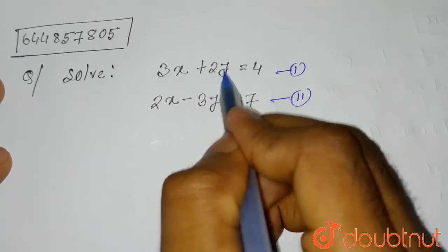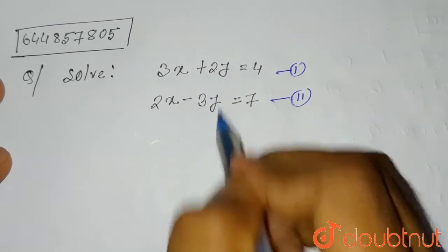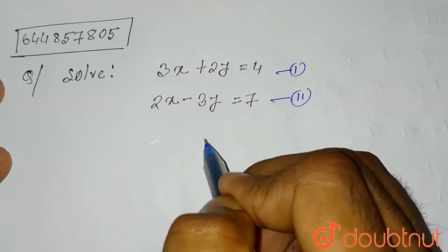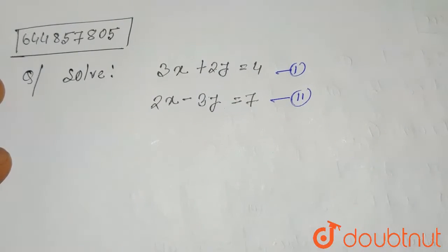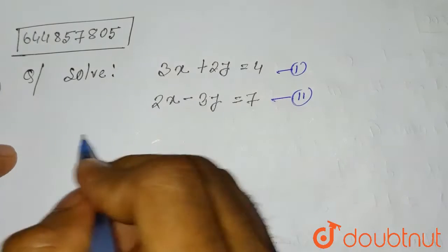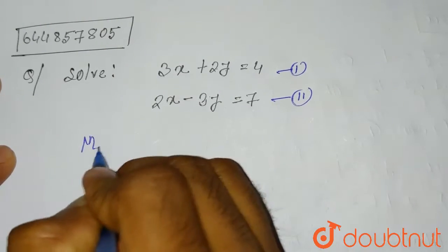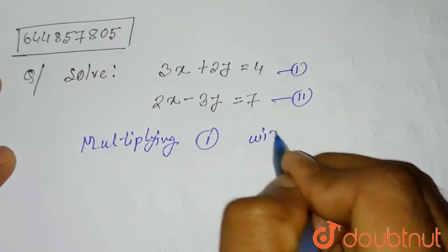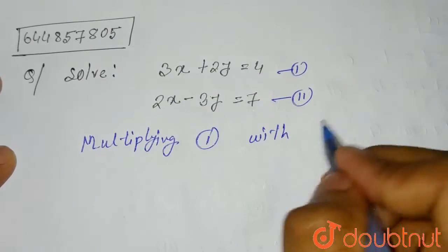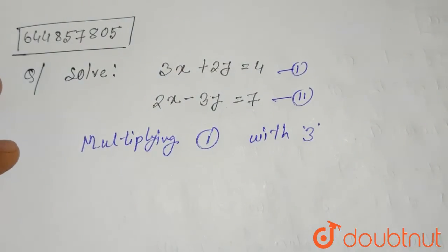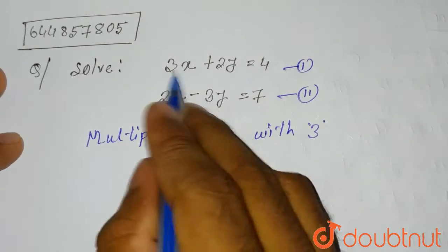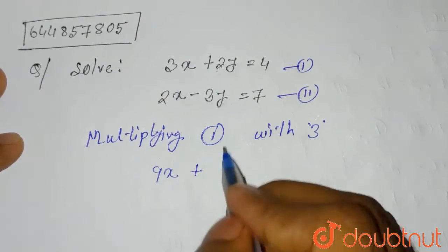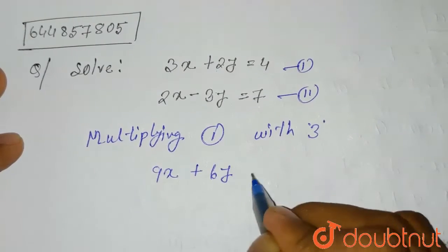First of all, to make the coefficient of y equal in both equations, we have to multiply the first equation by 3, giving 6, and the second equation by 2, also giving 6. So multiplying equation 1 by 3, we get: 3x × 3 = 9x, plus 2y × 3 = 6y, equals 4 × 3 = 12.